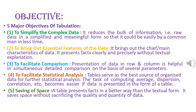Now let us discuss the major objectives of tabulation. There are five major objectives of tabulation. First, to simplify the complex data. Tabulation reduces the bulk of information — that is, raw data — into a simplified and meaningful form so that it could be easily understood by a common man in less time. Tabulation reduces the bulk of information into a precise format of rows and columns, and hence the useful data can be understood at a single glance.